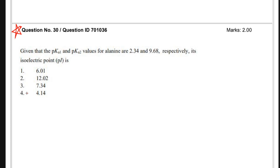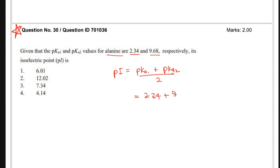The next question: given pKA1 and pKA2 values for alanine (2.34 and 9.68), find the isoelectric point. The isoelectric point formula is the average of the pKa values: (2.34 + 9.68) / 2 = 6.01, which is option A.